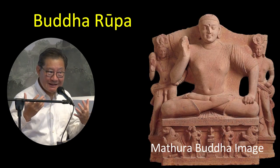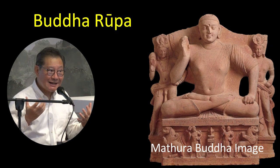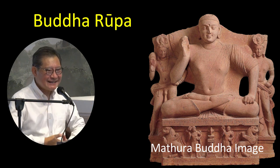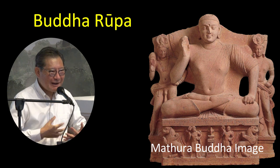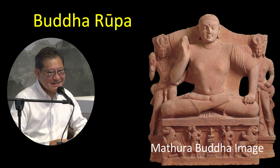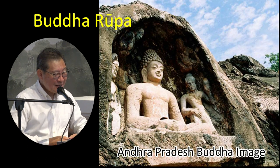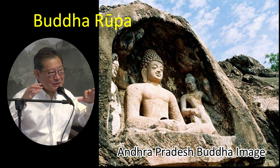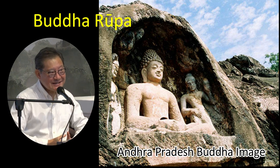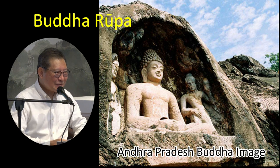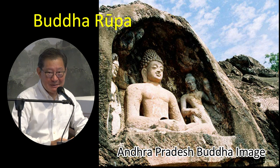At Mathura, which is quite close to Delhi, Buddha images also started appearing. The Buddha image of Mathura looks slightly different from the image of Gandhara — Gandhara being in Pakistan. So we have what we call the Gandhara Buddha images, which are very influenced by the Greek style. Another influential Buddha image comes from Andhra Pradesh in southern India. So there were three regions — Pakistan, Afghanistan, and parts of India — producing Buddha images in the 1st century Common Era. That is when we first get the Buddha image.